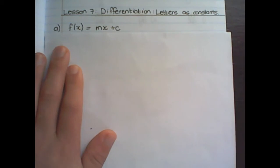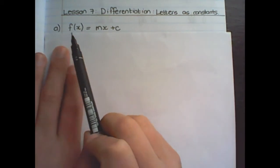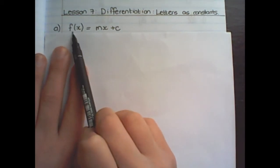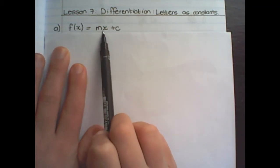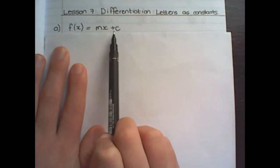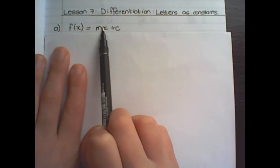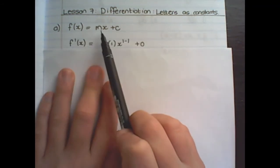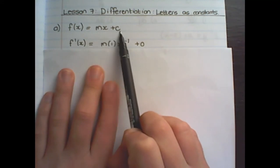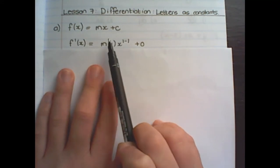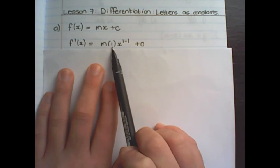In the previous lessons we have learned that the first derivative is the gradient. Because this is a linear expression we know that the first derivative would be equal to m. But when we differentiate mx plus c we have m times 1.